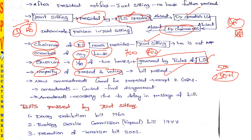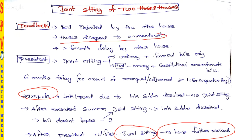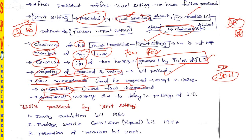No new amendments can be brought in the joint sitting. However, there are two exceptions: amendments that were previously disagreed upon between the houses can be brought, and amendments necessary due to the delay in passing the bill can be considered — but no major new amendments are permitted.